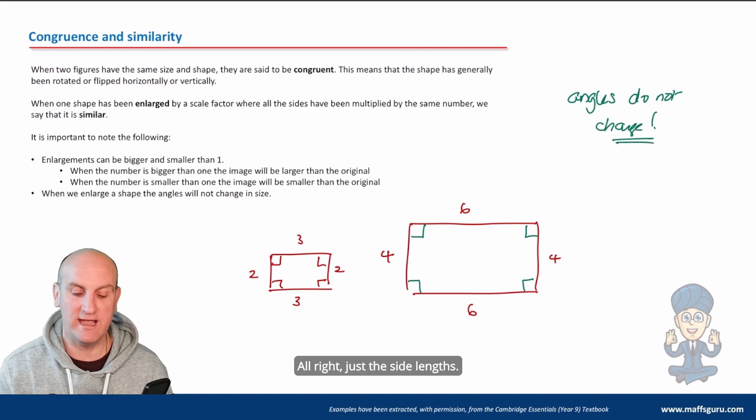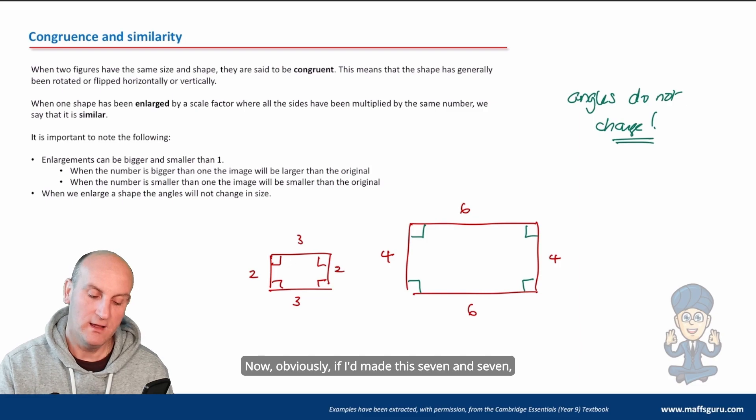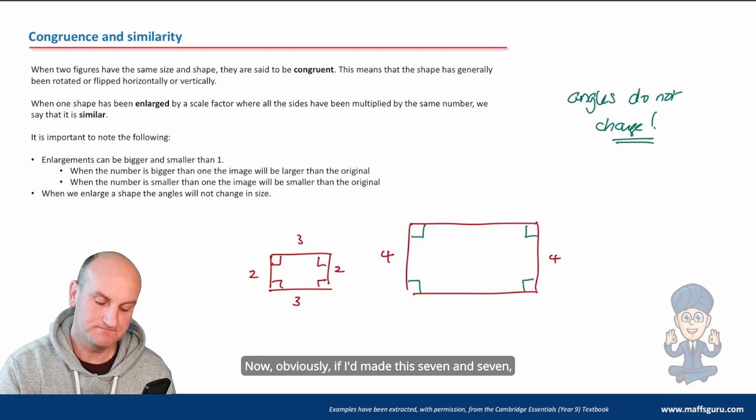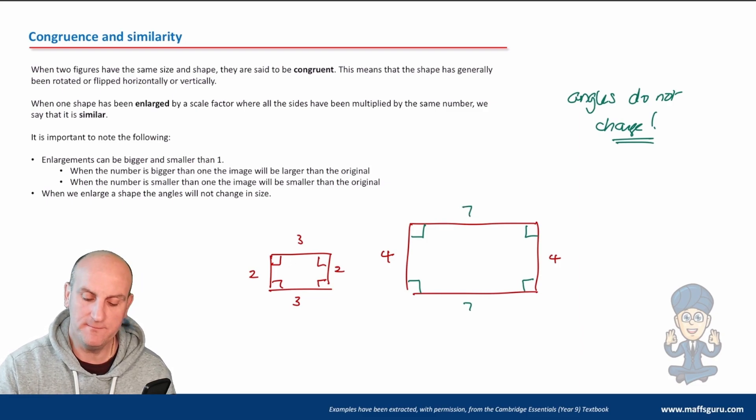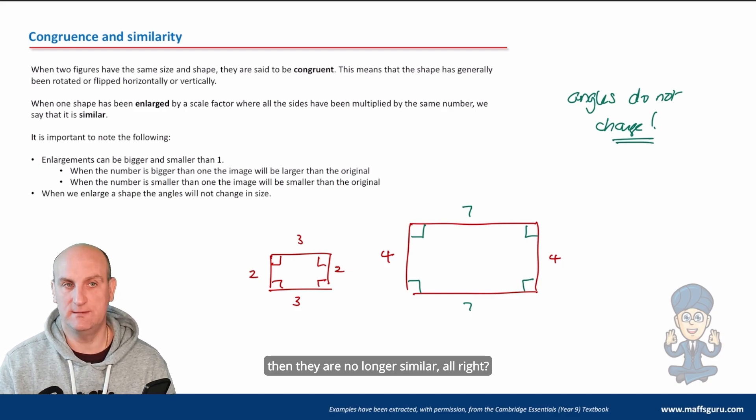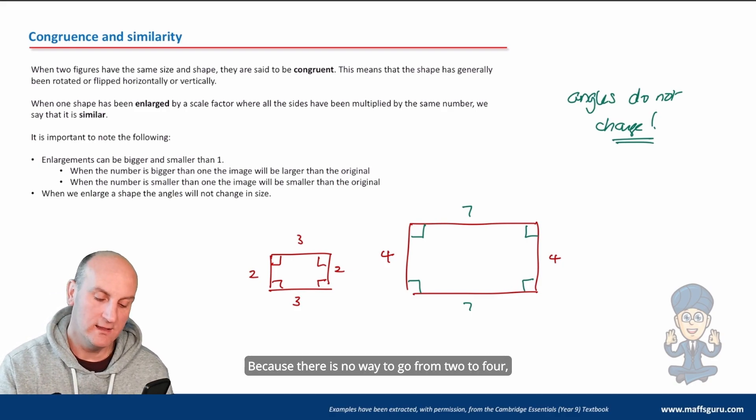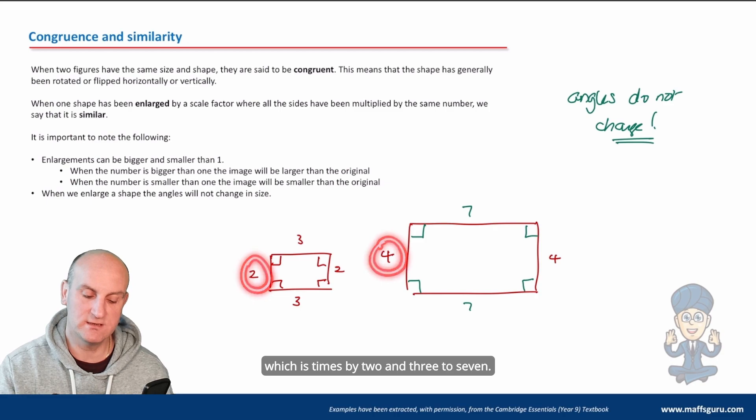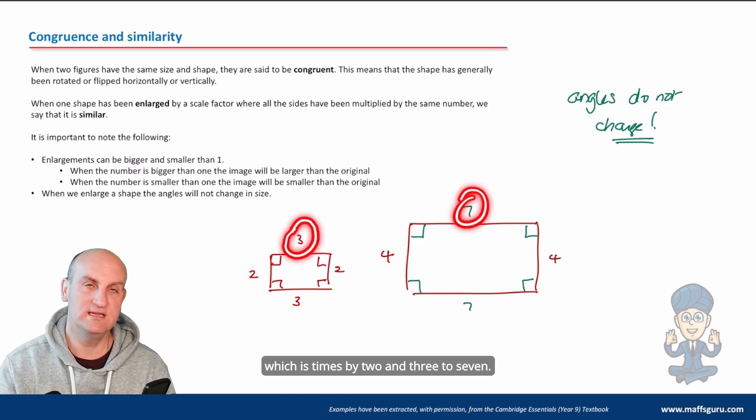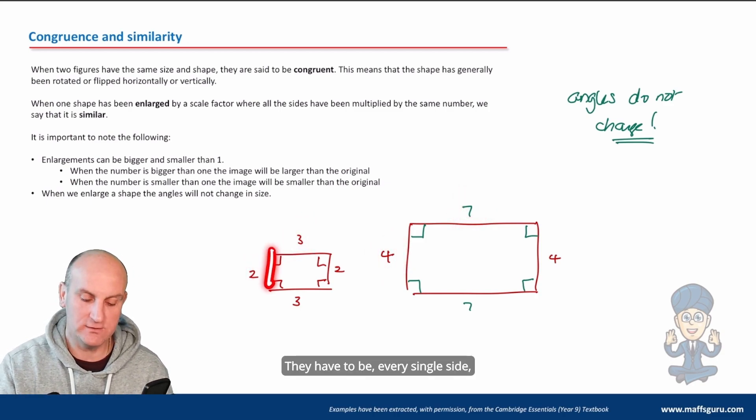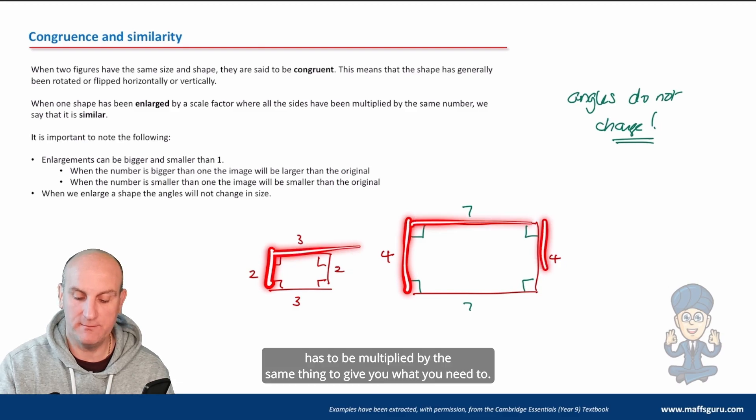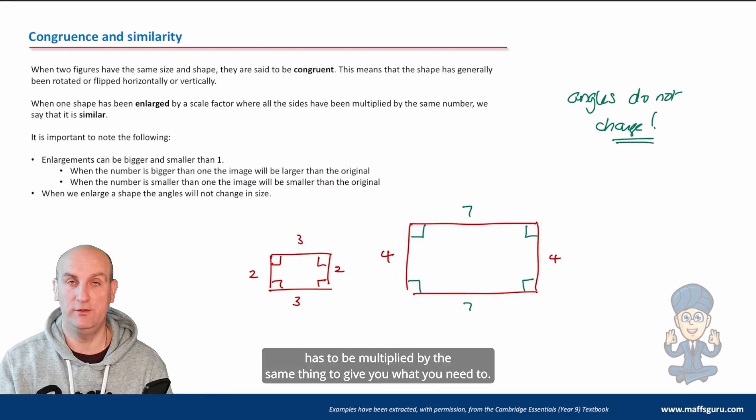A rectangle has four right angles, so it's really important to know that your angles do not change in size, just the side lengths. Now obviously if I'd made this seven and seven, then they are no longer similar, because there is no way to go from two to four (which is times by two) and three to seven. Every single side has to be multiplied by the same thing.